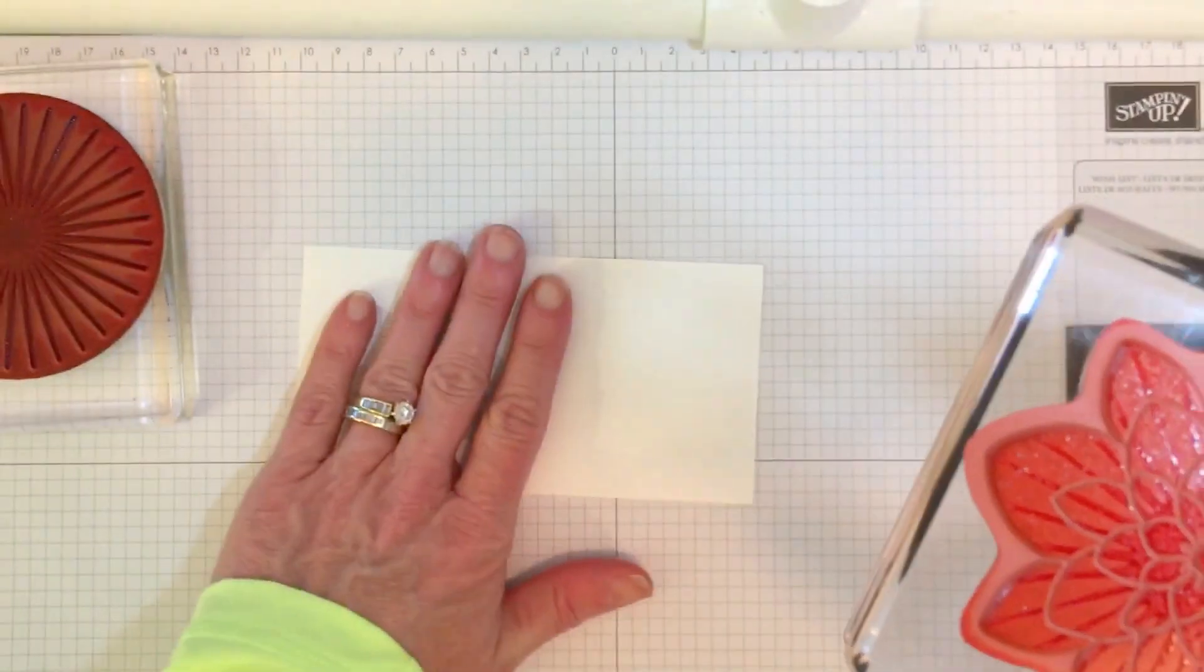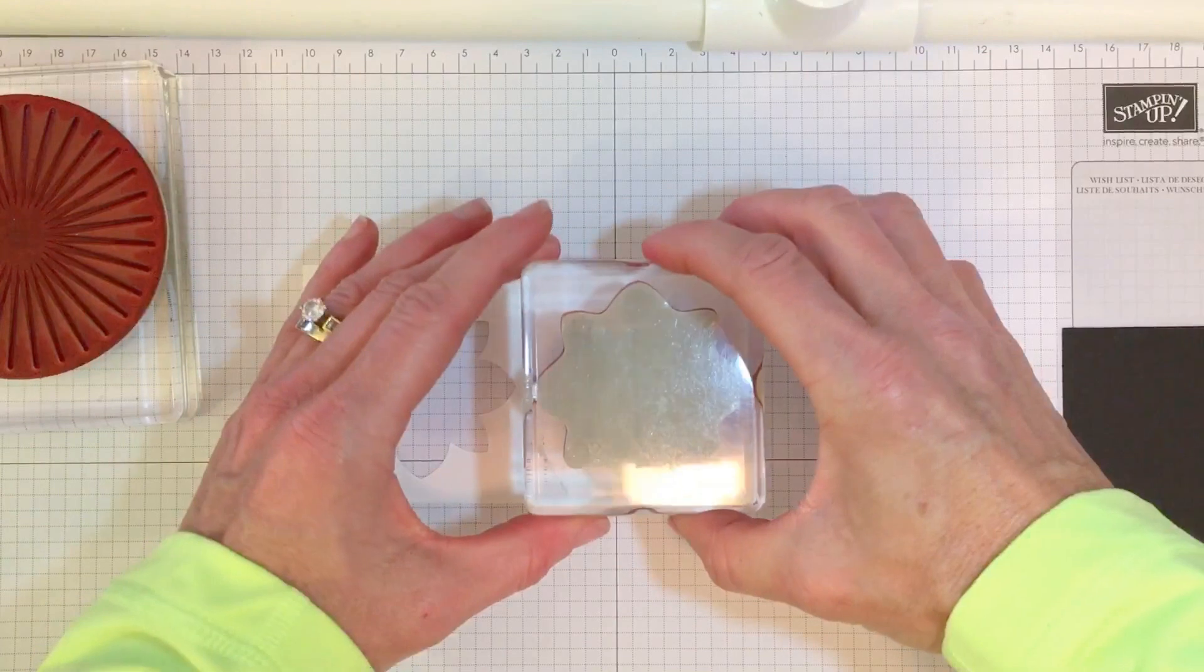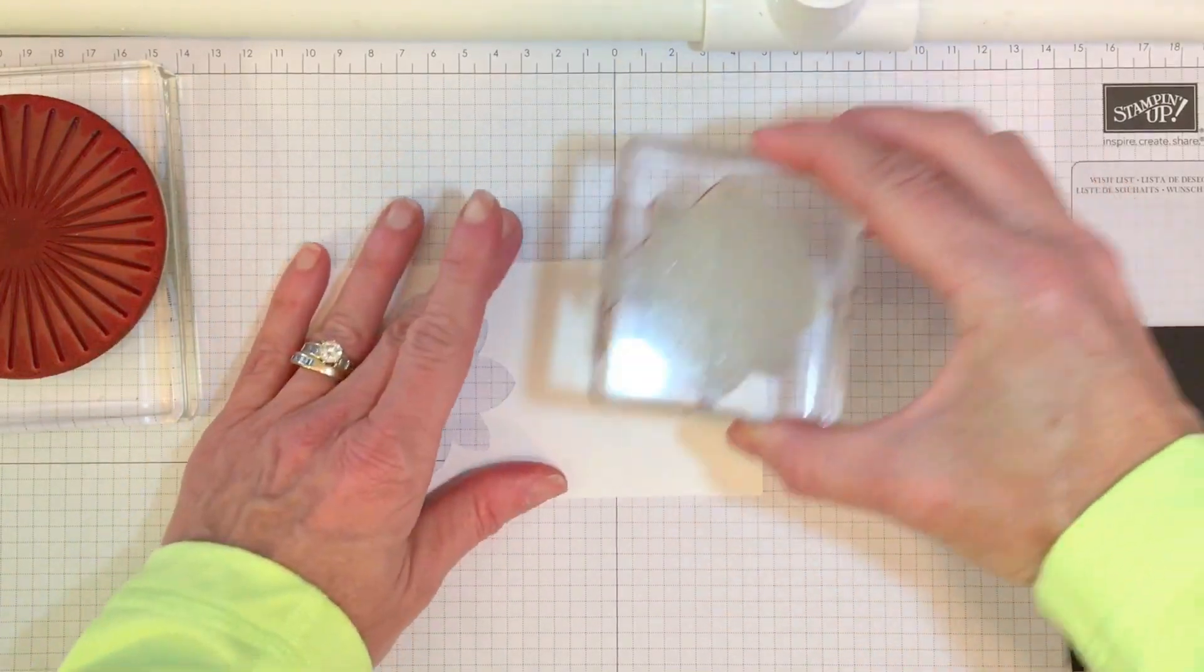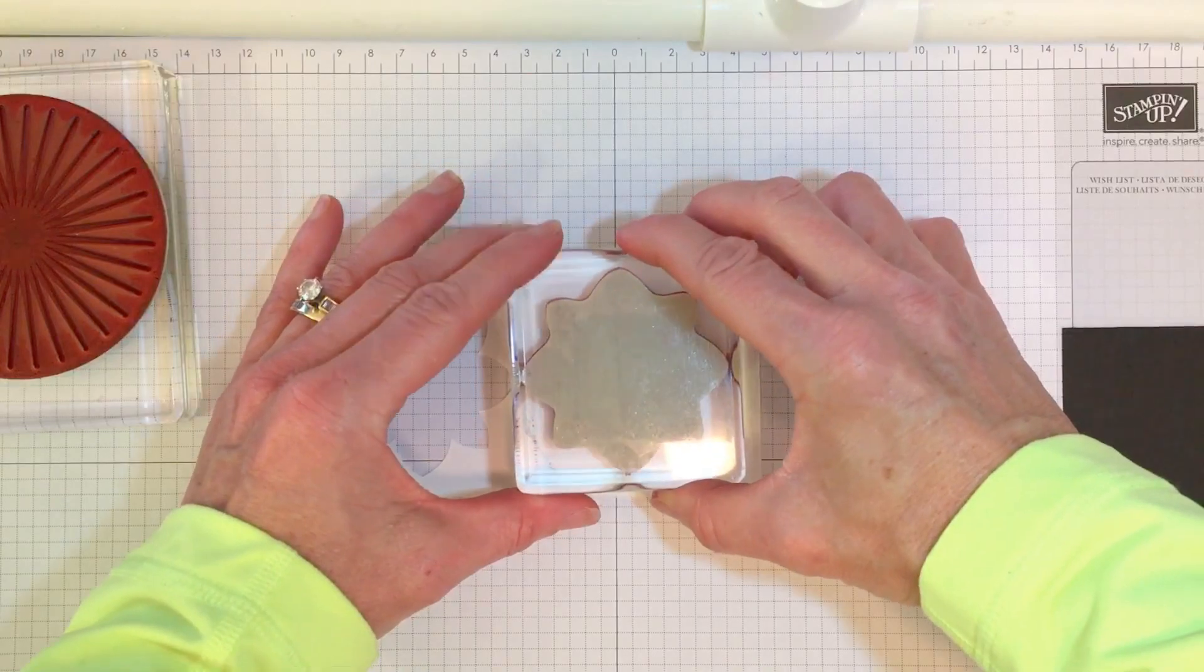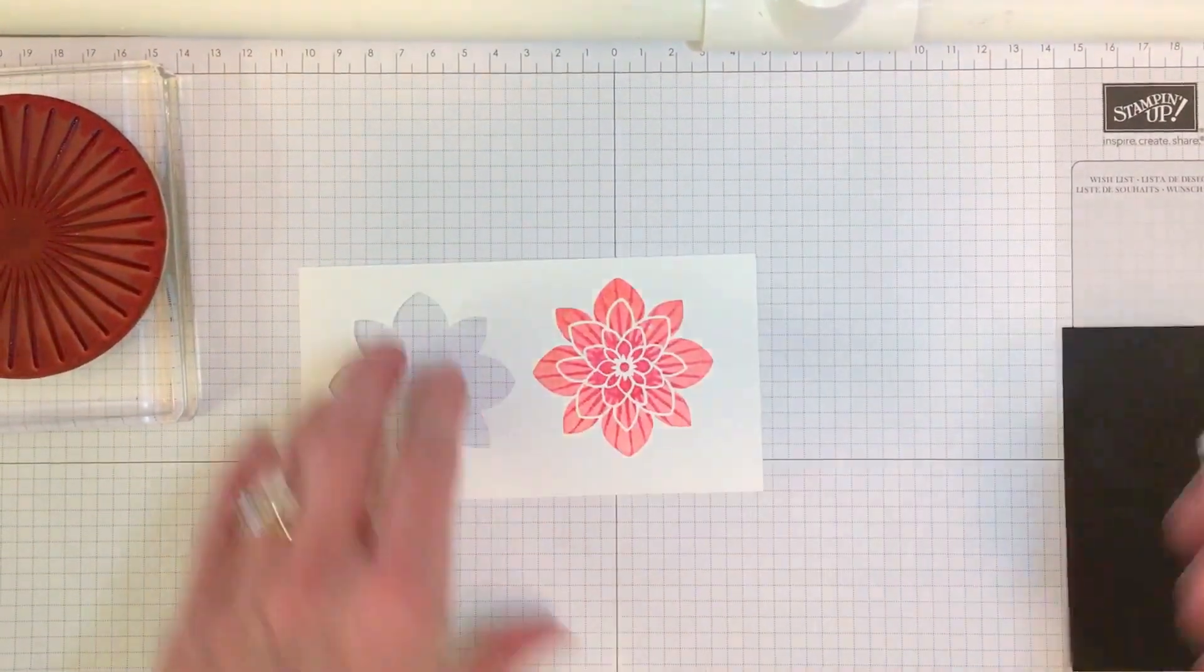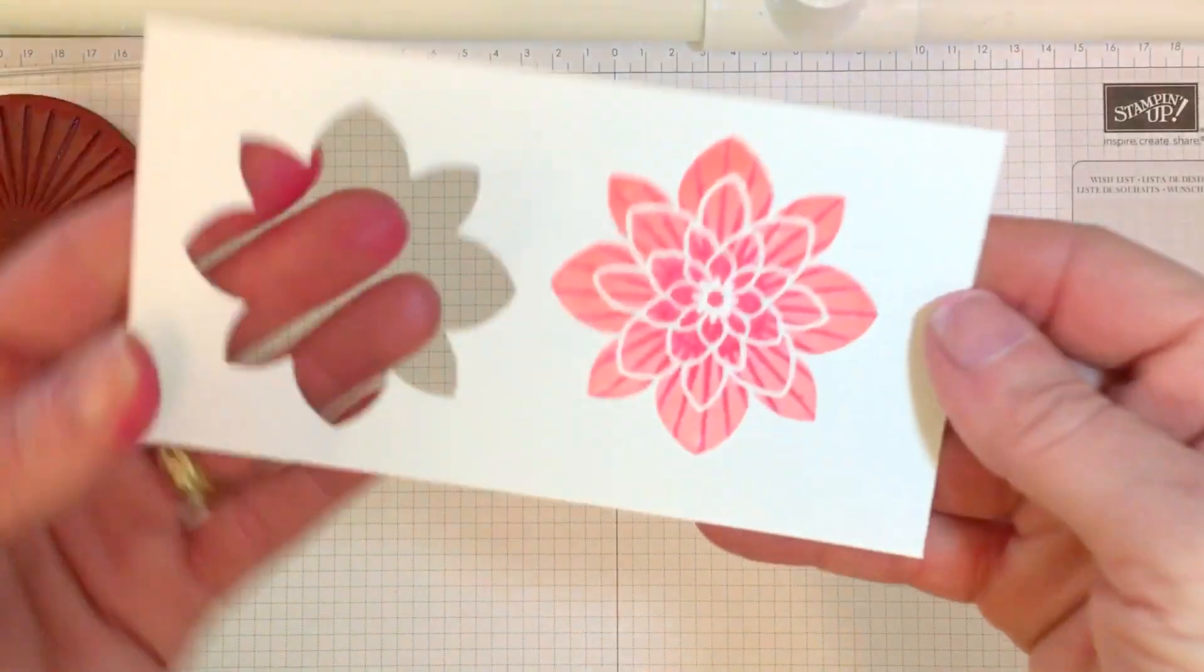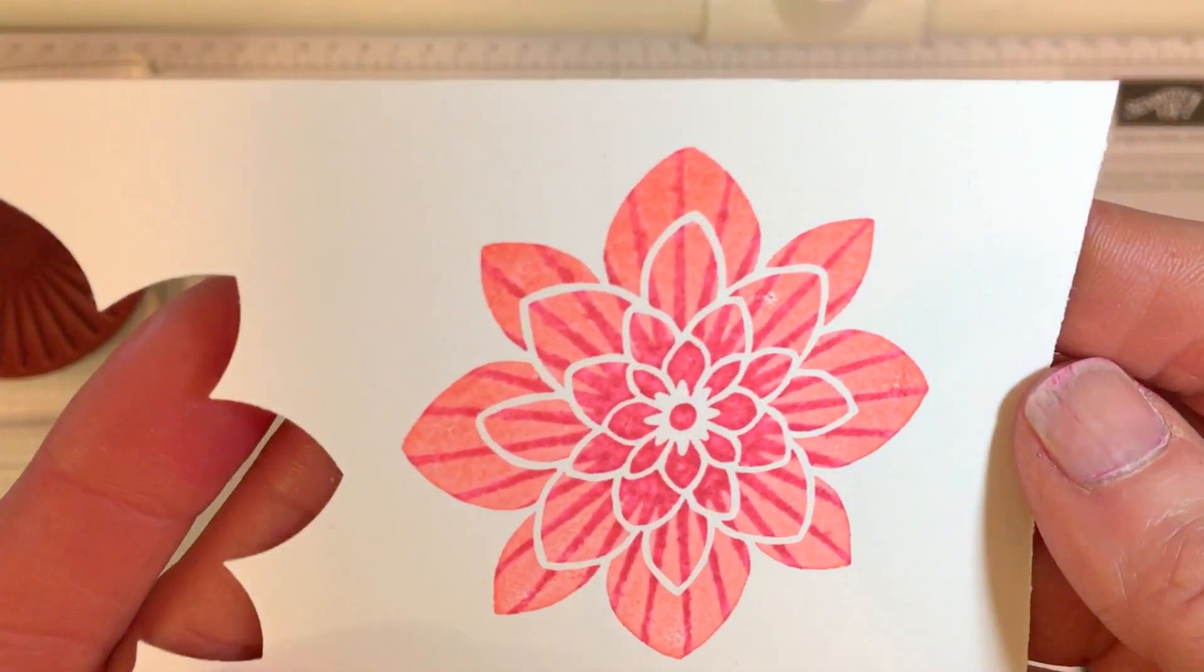I'm going to grab my scrap paper. I already made one. My son started talking at the end of the video. We're just going to press down, and then I have my flower, and you can see the stripes in the flower, right?